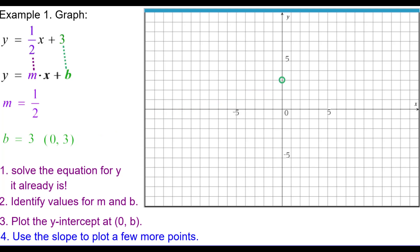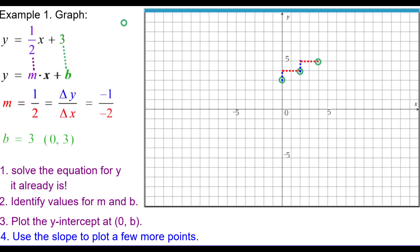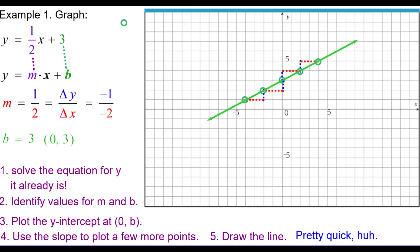Use the slope to plot a few more points. The slope is positive 1 half — a change in y of 1 with a change in x of 2 — so up 1, right 2 from that point, and again up 1, right 2 for a third point. Since 1 half can also be written as negative 1 divided by negative 2, we can go down 1, left 2 for additional points. With 5 collinear points, we can draw the line — that's the graph of y equals 1 half x plus 3.